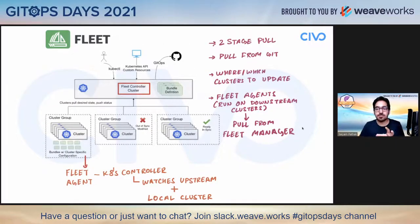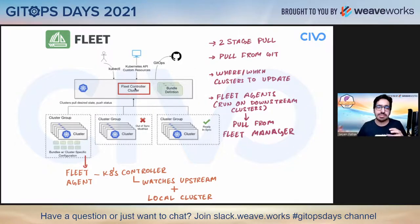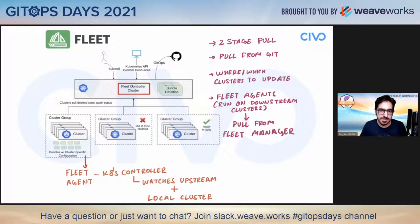Now let's see how Fleet works in a diagrammatic way. Fleet is basically a two-stage pull model. The fleet controller pulls from Git. This architecture depicts a multi-cluster environment where you have many clusters to manage. There can be a single cluster — you can call it fleet manager or fleet controller, they're interchangeable terms. It uses all the power of Kubernetes APIs, and the fleet controller connects to a Git repo to do the actual GitOps. It is a bunch of Kubernetes API custom resources and you can interact with it via kubectl.